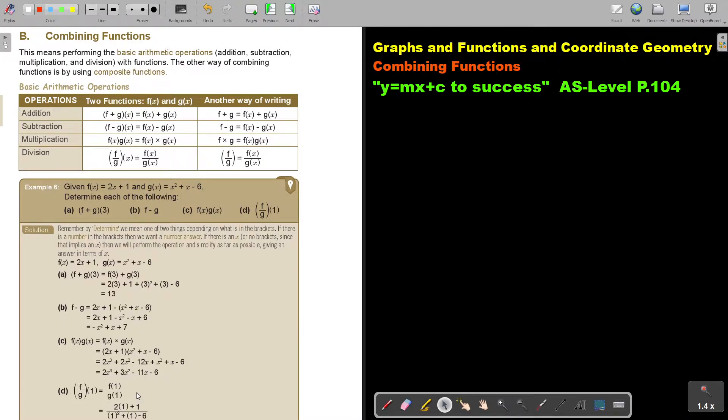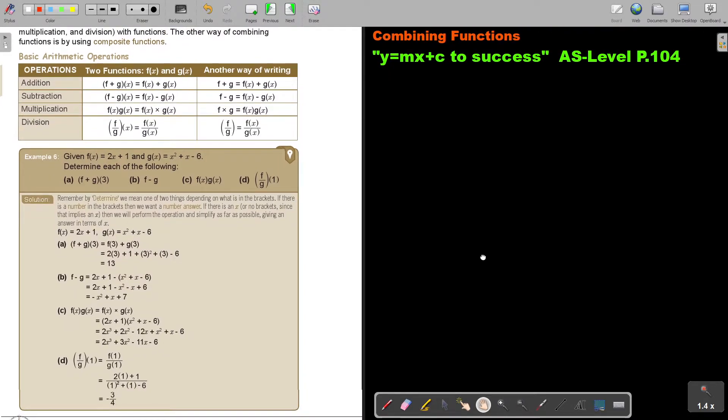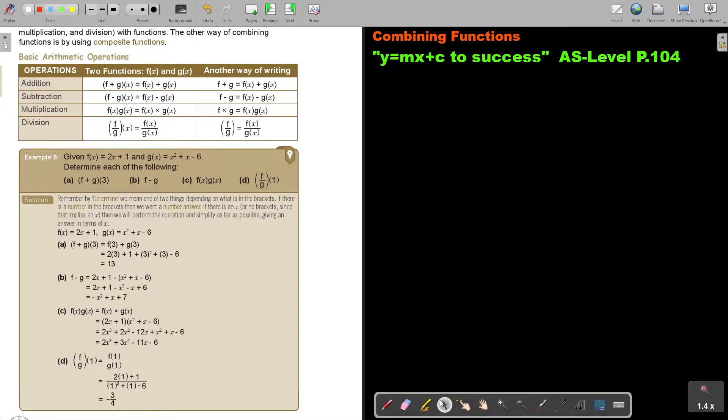Let's look at an example. Given f of x equals 2x plus 1 and g of x equals x squared plus x minus 6, determine each of the following. So it's first addition.